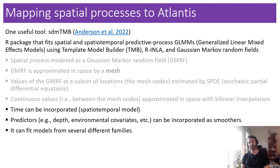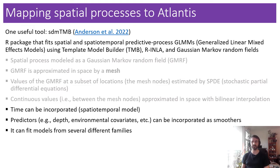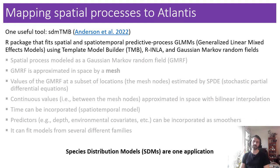You can incorporate time if you have a temporal component in your data. You can incorporate other predictors like depth, temperature, and any environmental covariate you might have. These are incorporated as smoothers. You can fit models from different families depending on your needs and the shape of the response variable, as with other GLMs. One common application for an approach like this would be species distribution models, or SDMs.